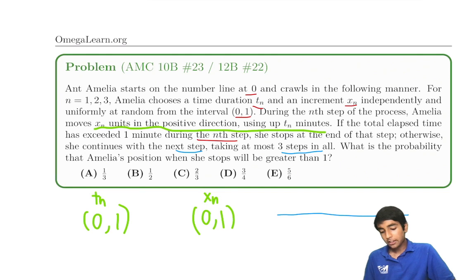We're trying to find the probability Amelia will stop greater than 1. Let's break this down.